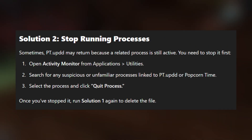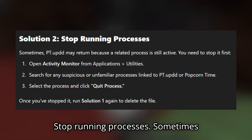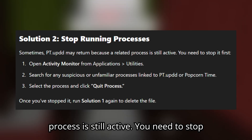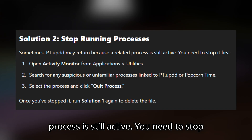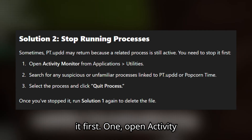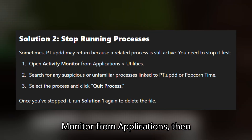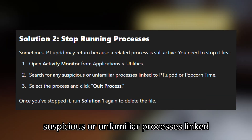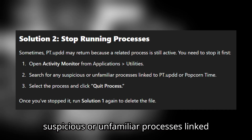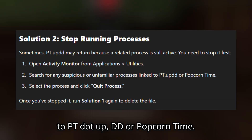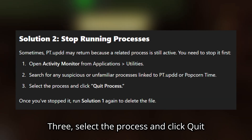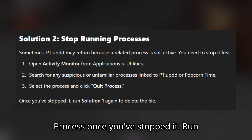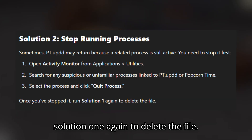Solution 2: Stop running processes. Sometimes pt.updd may return because a related process is still active. You need to stop it first. Open Activity Monitor from Applications, then Utilities. Search for any suspicious or unfamiliar processes linked to pt.updd or Popcorn Time. Select the process and click Quit Process. Once you've stopped it, run Solution 1 again to delete the file.